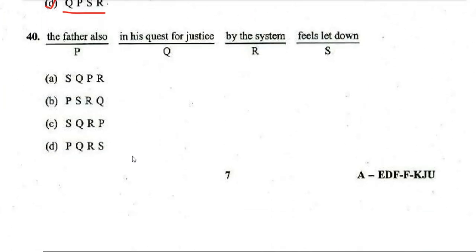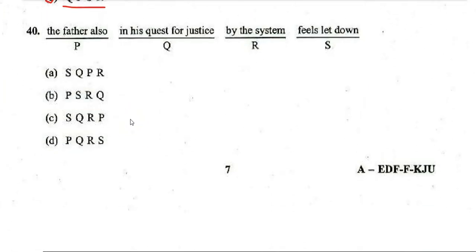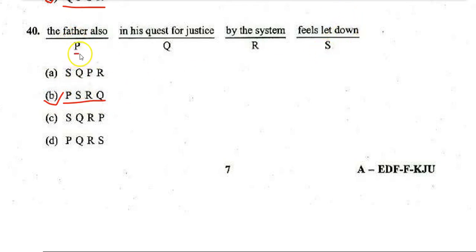Next word-ordering question parts: 'the father also,' 'in his quest for justice,' 'by the system,' 'feels let down.' The correct sequence is P, S, R, Q — forming: 'The father also feels let down by the system in his quest for justice.'